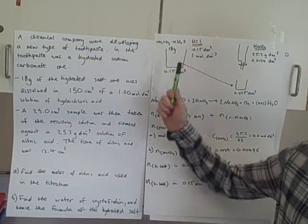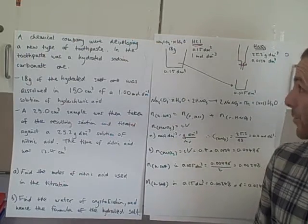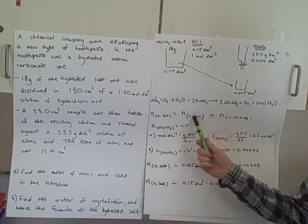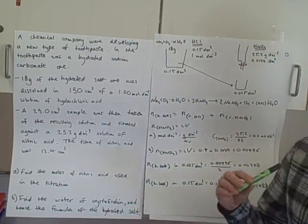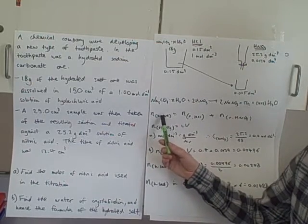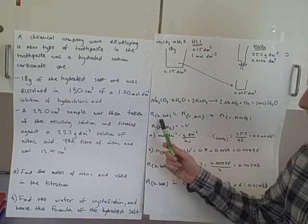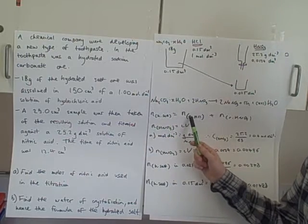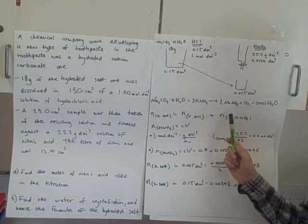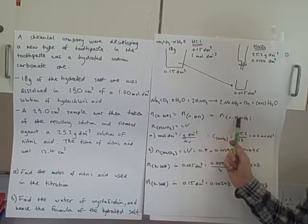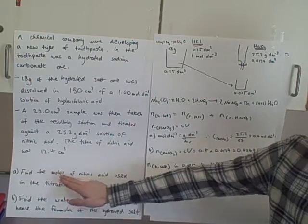Just like the last question, the hydrated sodium salt is reacting with two compounds: first with hydrochloric acid, then with nitric acid. To find the total moles of hydrated salt — which I'll call 'H salt' — that equals the moles that reacted with HCl added to the moles that reacted with the nitric acid. It's almost like two separate questions which we then add together.